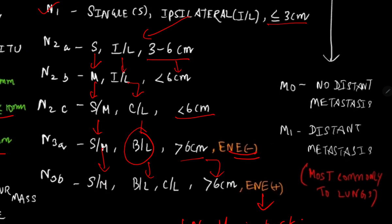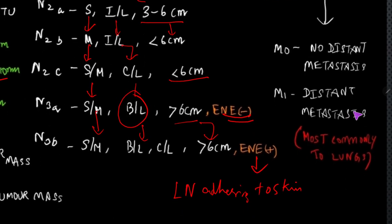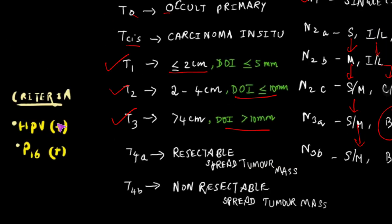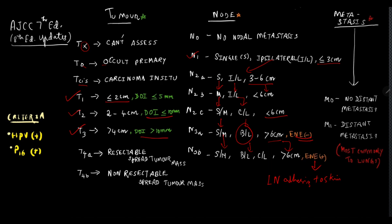Next, coming to metastasis, M0 is no distant metastasis and M1 is distant metastasis. The most common site for distant metastasis is the lungs because we are dealing with oral cavity. From oral cavity to oropharynx, laryngopharynx and larynx, and then to the lungs. Apart from this, they also include criteria of HPV virus positive or P16 antigen present or not under updated 8th edition of AJCC classification staging of oral tumors.